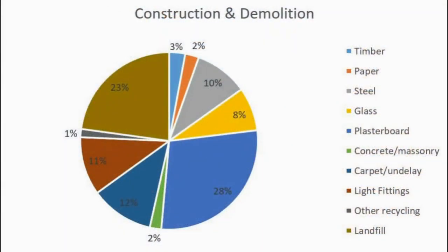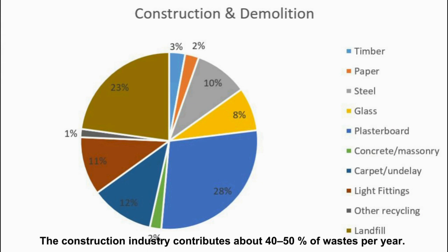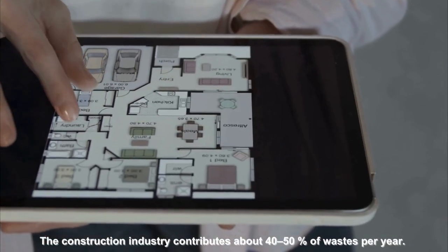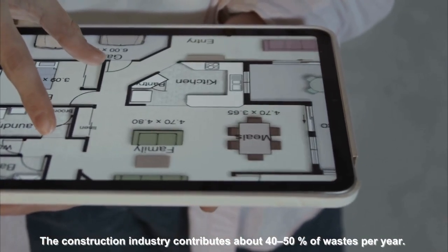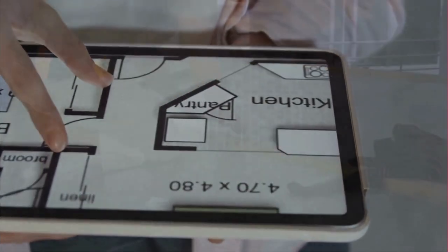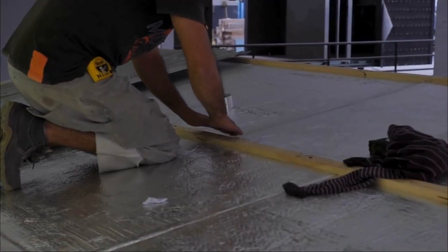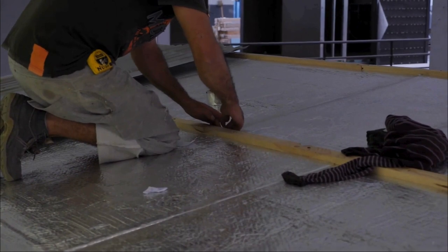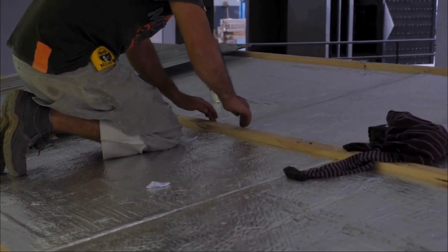The construction industry produces an enormous amount of waste. A large volume results from the production, transportation, and use of materials. In the European Union, the construction industry contributes about 40 to 50 percent of waste per year. Apart from waste generation, the building industry is rapidly growing in world energy use, especially use of finite fossil fuel resources.